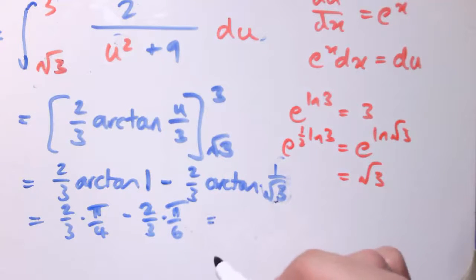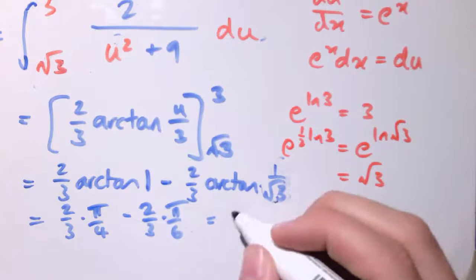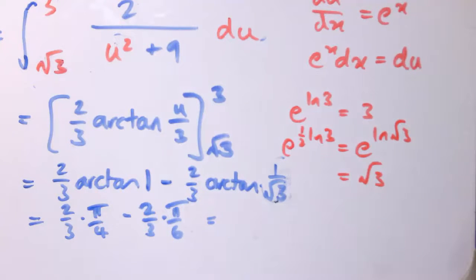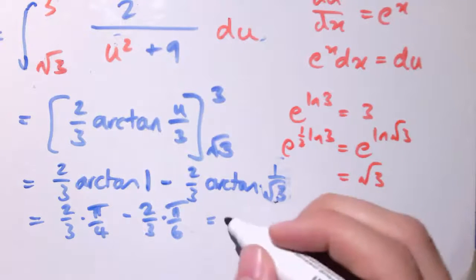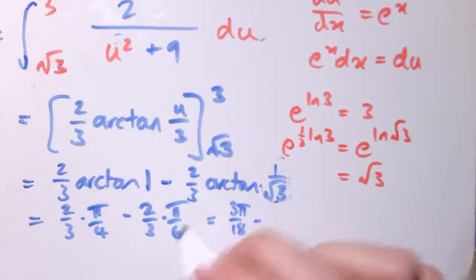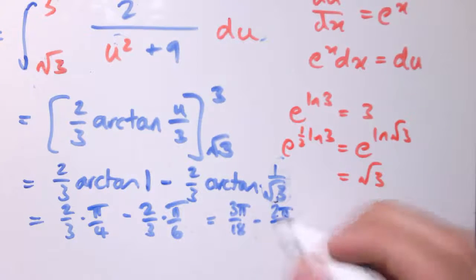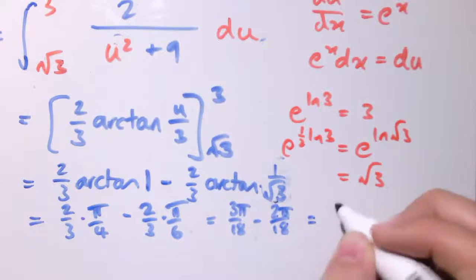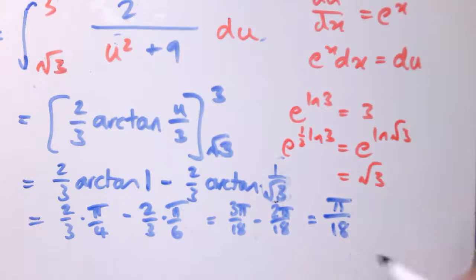So I get, on simplifying that fraction, that 2 cancels out here. So I've got π/6 which is 3π/18 minus 2π divided by 18 which is just π divided by 18.